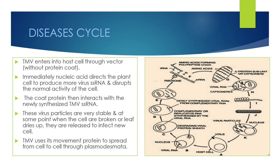Moving on to the disease cycle — tobacco mosaic virus enters the plant cell through a vector. Once inside the host cell, the protein coat falls away. The single-stranded RNA then directs the plant cell to produce more virus, disrupting the normal activity of the cell. The coat protein then interacts with the newly synthesized TMV. These virus particles are very stable, and when cells are broken or the leaf dries up, they are released to infect new plants.